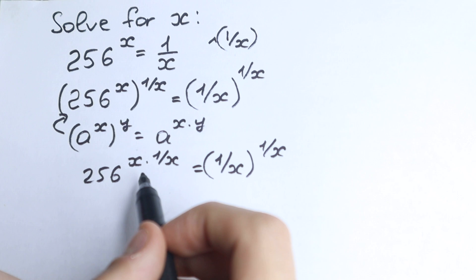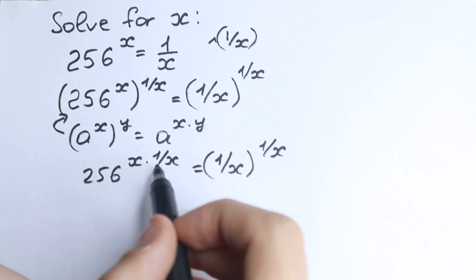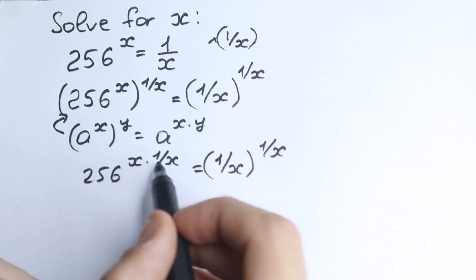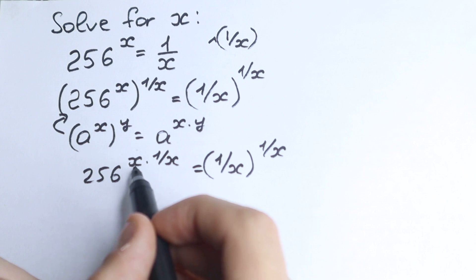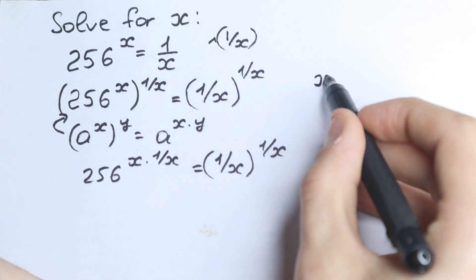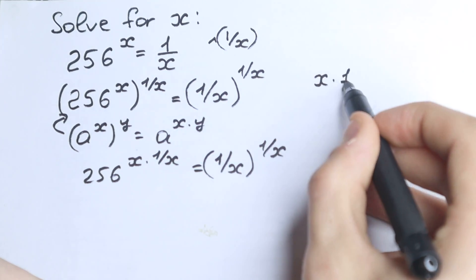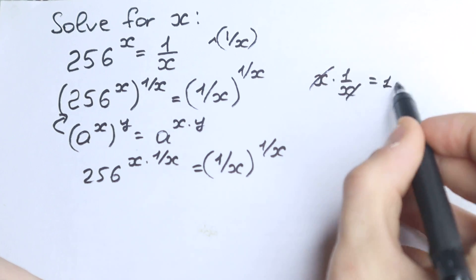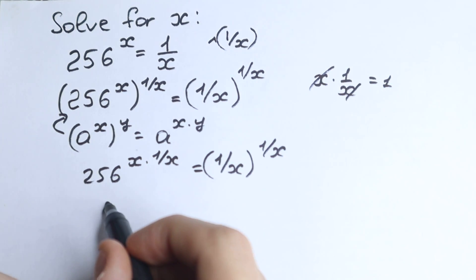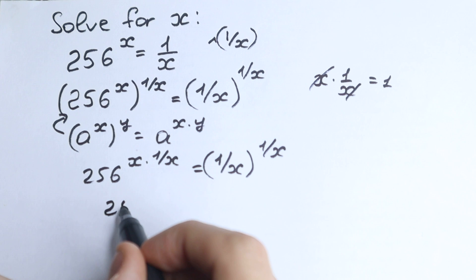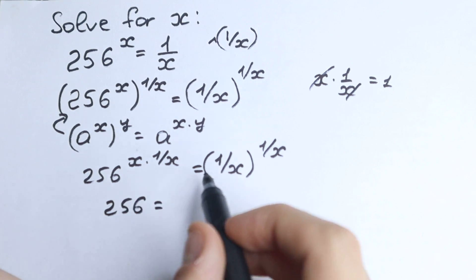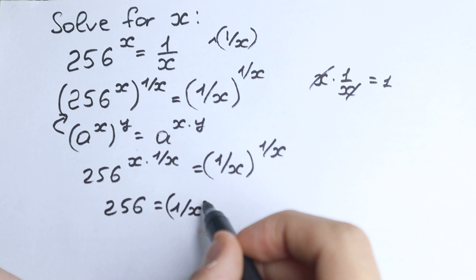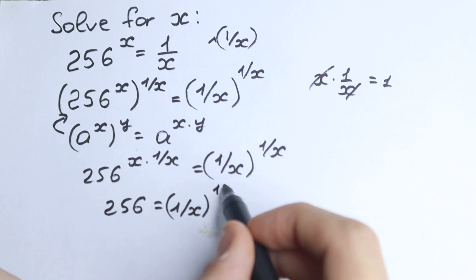Take a look closely at this expression: we have x times 1 over x. If you multiply them by each other, we get 1 — because x times 1 over x, we can cancel the x and we have 1. So on the left hand side this is equal to 256, equal to 1 over x to the power 1 over x.